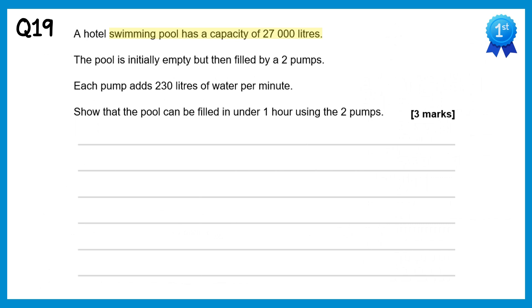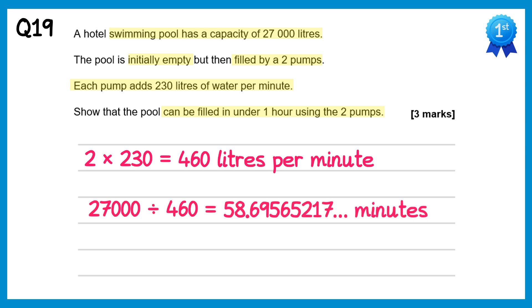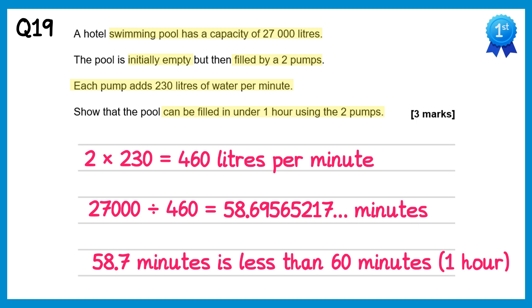The swimming pool has a capacity of 27,000 litres and is filled by two pumps each pumping 230 litres per minute. Together they pump 2 × 230 = 460 litres per minute. 27,000 ÷ 460 ≈ 58.7 minutes, which is less than 60 minutes (one hour), so the pool can be filled in under one hour.